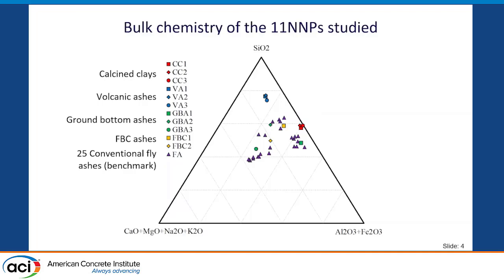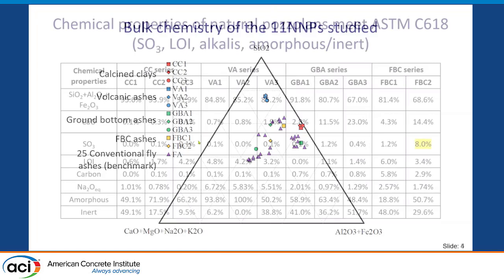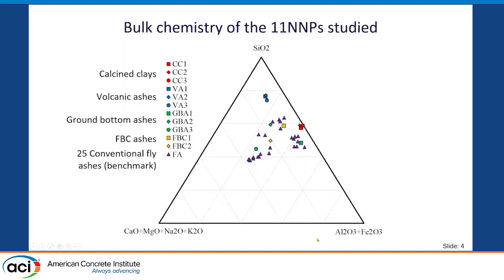I want to show this classical ternary phase diagram, with silicon at the top, the sum of calcium and alkalis on one corner, and aluminum and iron on the other corner. The blue dots are volcanic ashes showing about 85% silicon oxide and a little less than 10% calcium and alkalis. Calcined clays are clustered with practically no calcium and a combination of silicon, aluminum, and iron. Then we have a plume of coal-based pozzolans, including 25 conventional ashes as a benchmark, along with ground bottom ashes and fluidized bed combustion ashes.